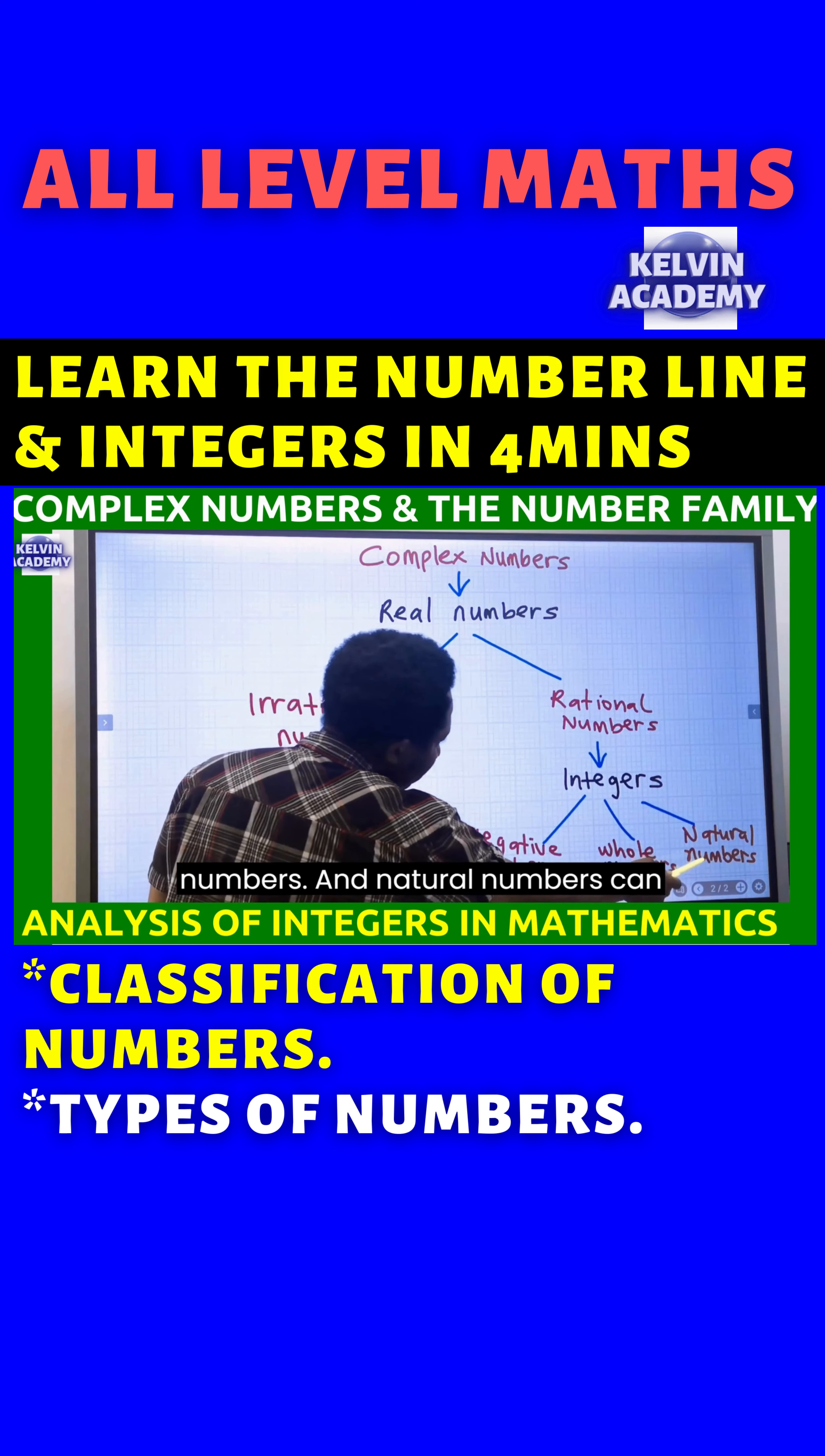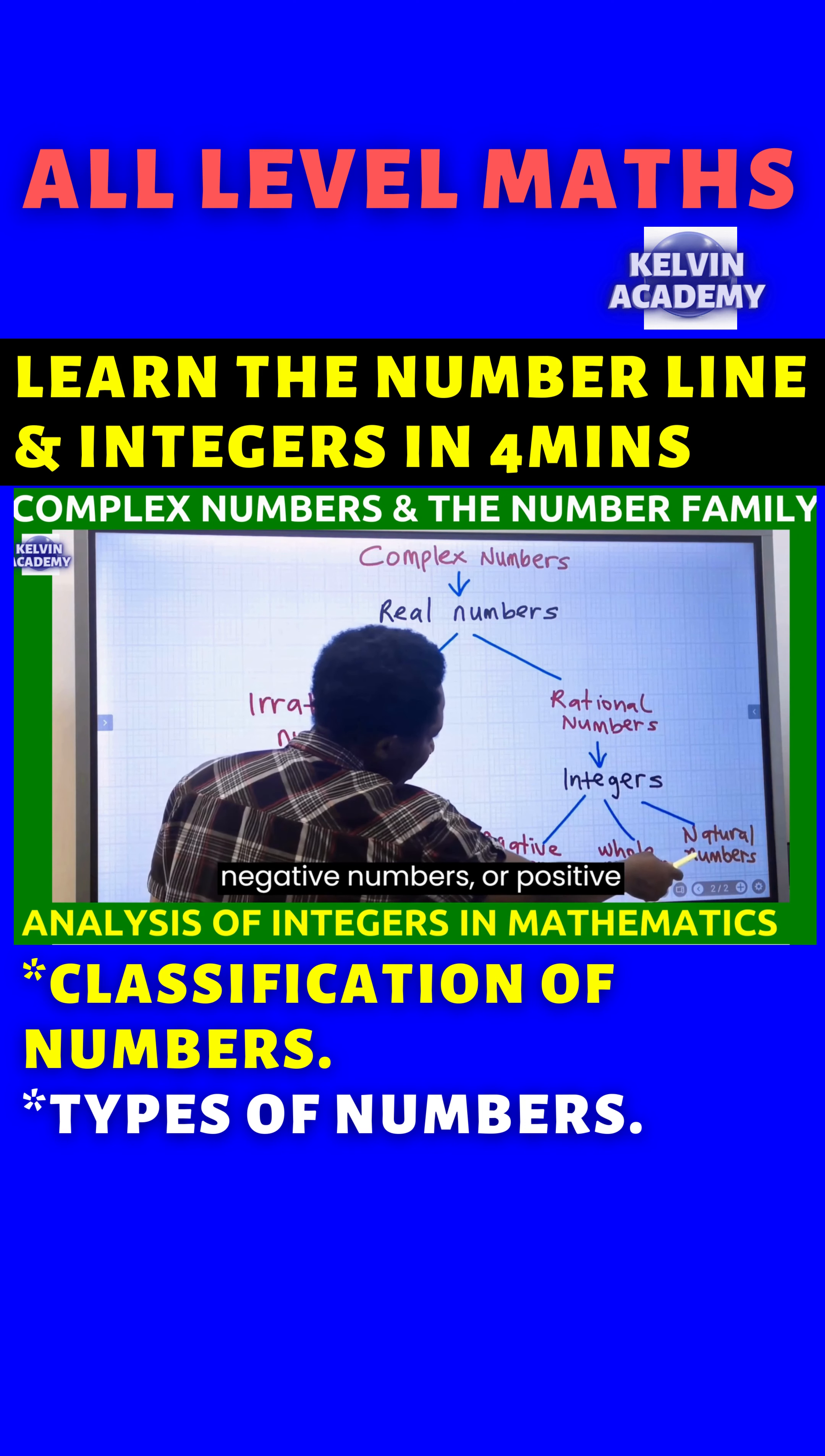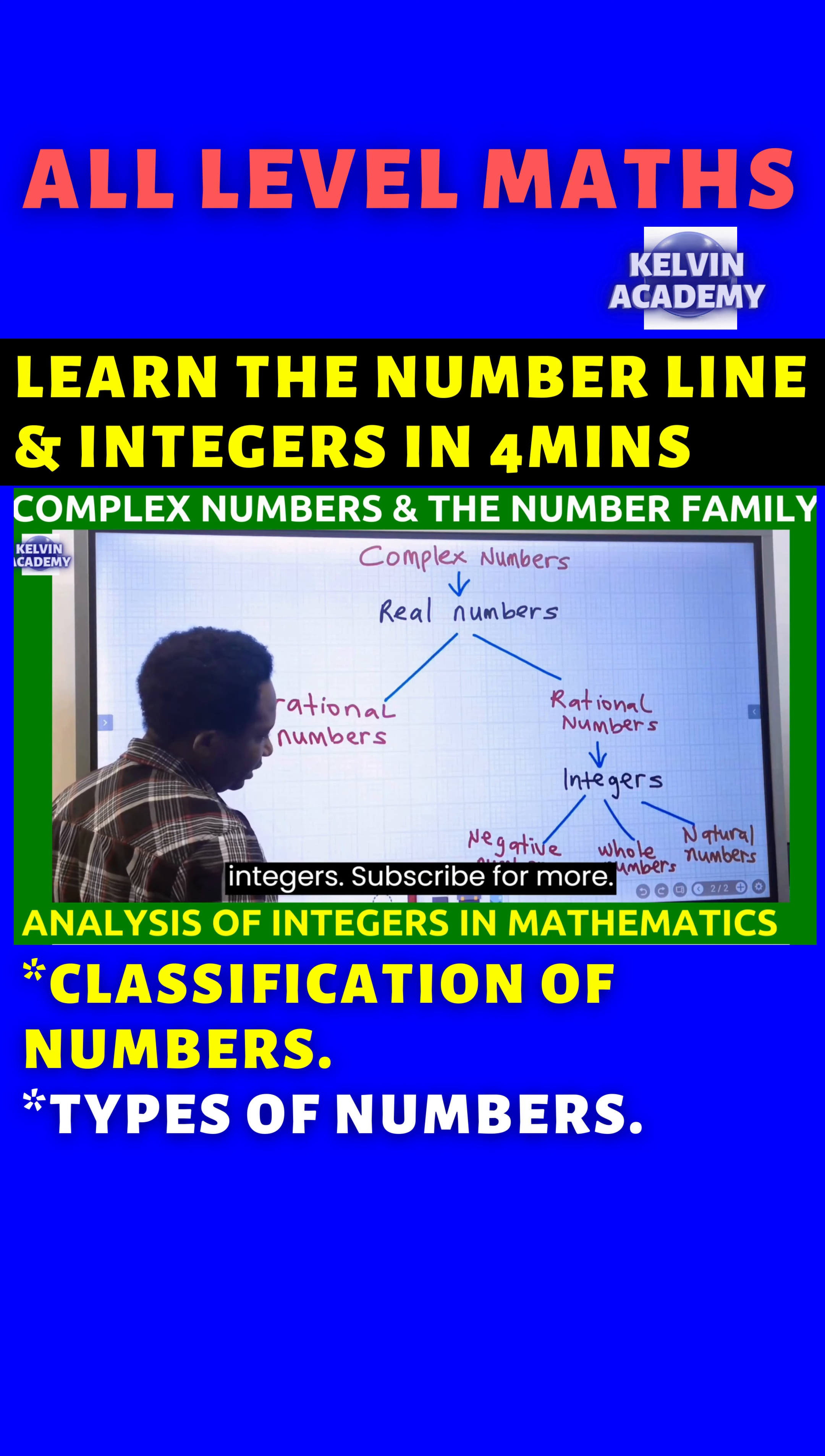And natural numbers can be called positive numbers, or counting numbers, or non-negative numbers, or positive integers. Also, negative numbers can be called negative integers.